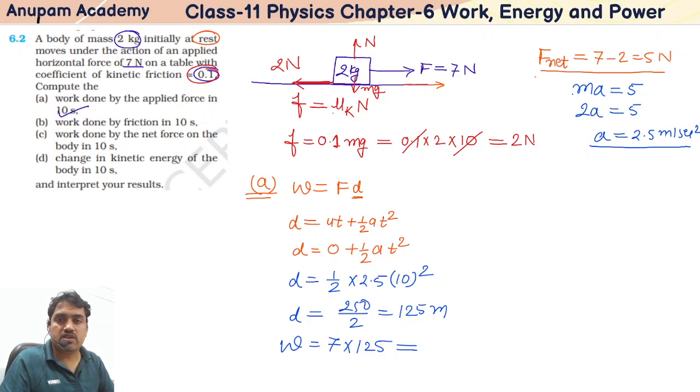If you are multiplying this, it is 875 Joules. That is the first answer. If you are using g equal to 9.8, then you will get a little bit more work done. It should be 882 Joules.